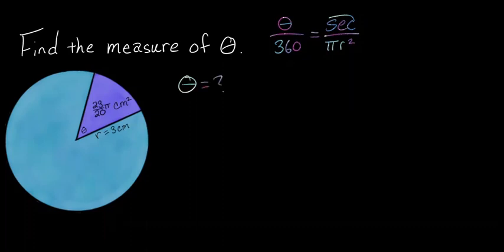Theta is an unknown. Sector area is given as 23 over 20 pi. Radius equals 3.